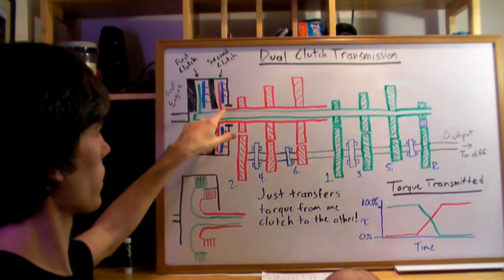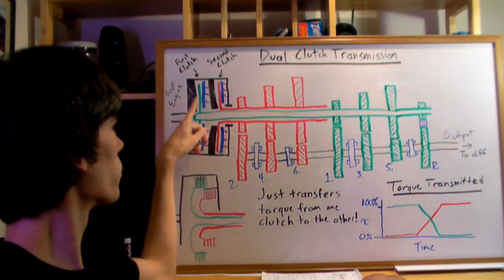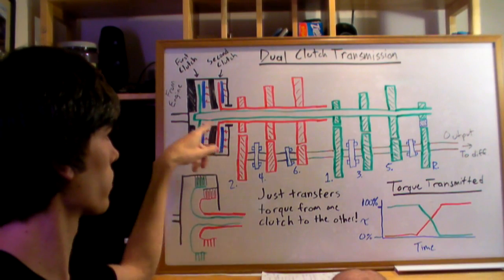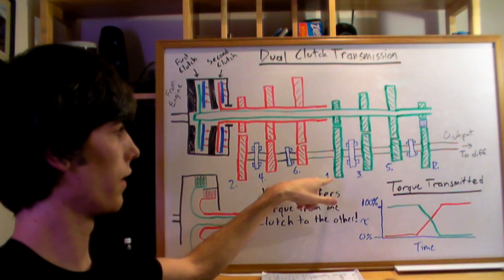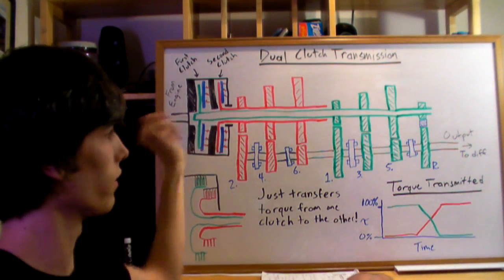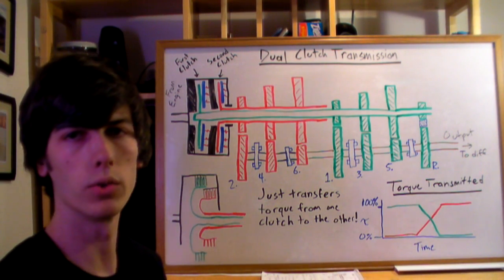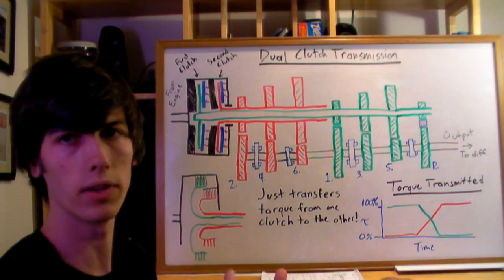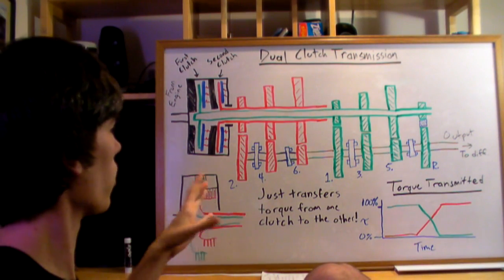Each of these clutches controls either the even or the odd gears. You can see the gears here 1, 3, 5 and reverse, and 2, 4 and 6. The green shaft and the green clutch is going to be controlling the odd gears and the red shaft is going to be controlling the even gears. This is important because this is how you can switch so quickly. The advantage of dual clutch transmissions is that you can switch almost instantaneously and the driver won't even feel the acceleration change. So it's almost constant.